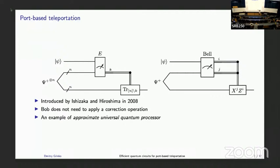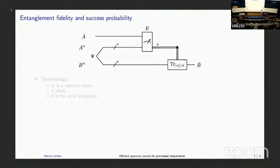How you can use port-based teleportation for this: Bob just needs to take the resource state and apply the unitary he wants to encode into it, like U to the tensor power n. Then this whole state describes the program for such a unitary. So some terminology: psi is called the resource state, the wires sharing entanglement are called ports, and d is the local dimension — the dimension of the system A-bar which Alice wants to teleport to Bob's side.